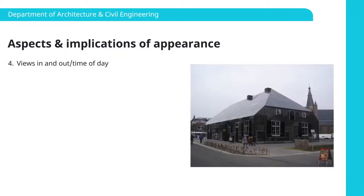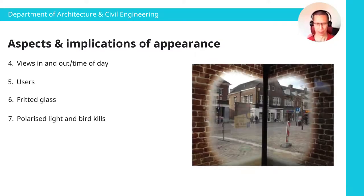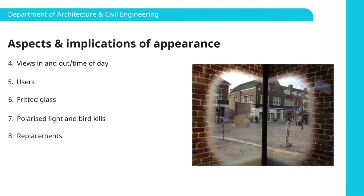We'll also look at views in and out, because no one really thinks about what it's like on the inside. I'll talk briefly about fritted glass — I've mentioned it before, but I'll look at some examples of fritted glass, tints and shadings. I'll finish off with the problem of polarised light, reflection from buildings, and bird kills. We'll also cover specialist glasses for listed buildings with vintage or specialist glazing units, and how to replace those. And if we've got time, I'll talk about some glass research and media facades.